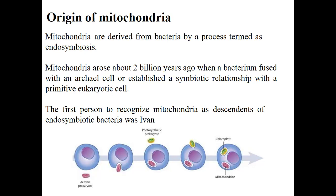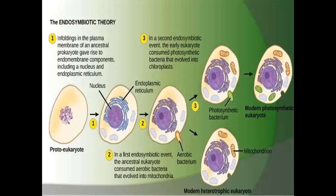The first person to recognize mitochondria as descendants of endosymbiotic bacteria was Evan. It involved an aerobic bacterium moving inside the cell, and similarly chloroplasts also moved inside the cell, living within it and performing different functions, becoming a permanent part of the cell. Before eukaryotic cells, there were proto-eukaryotic cells that had a nucleus and endoplasmic reticulum, and different aerobic bacteria moved in and eventually evolved into mitochondria, acting as the powerhouse of the cell.